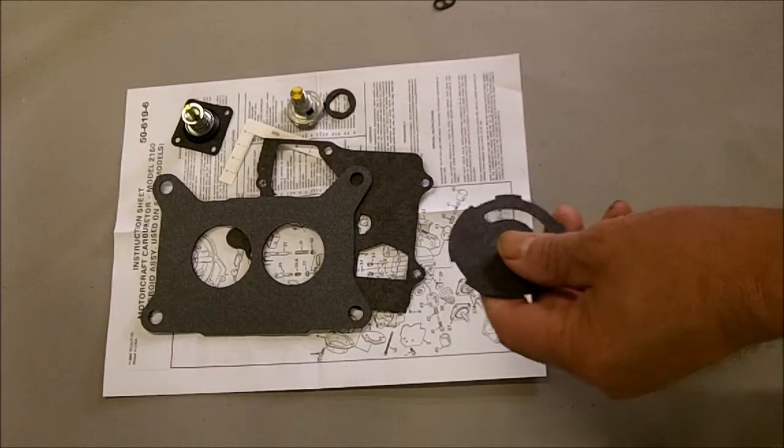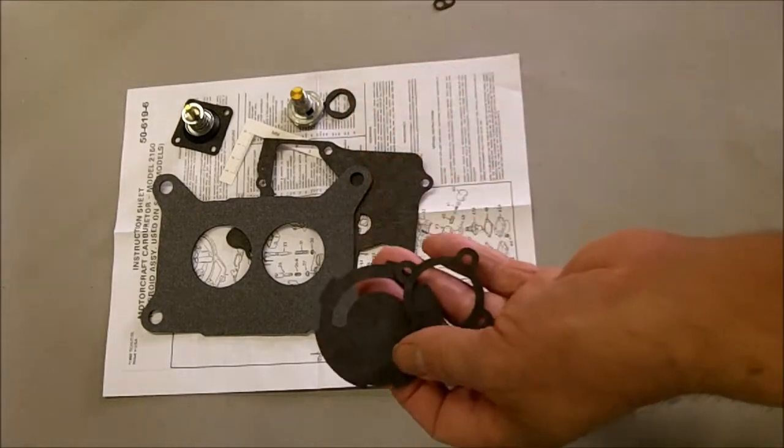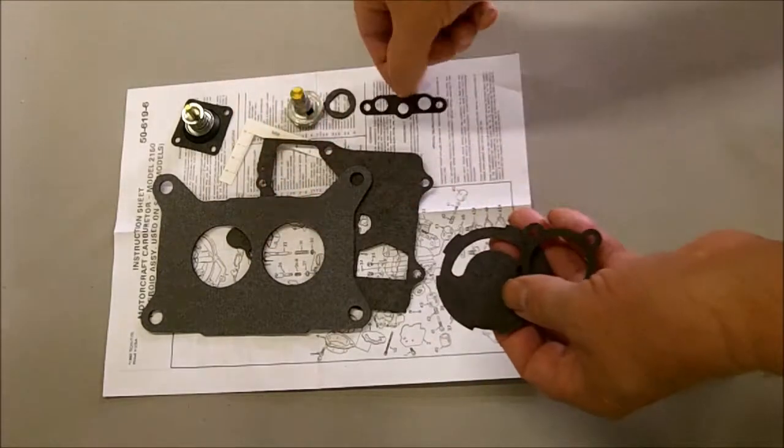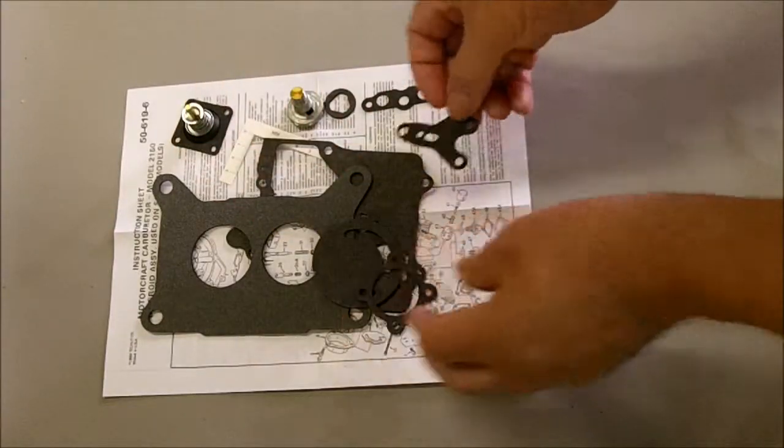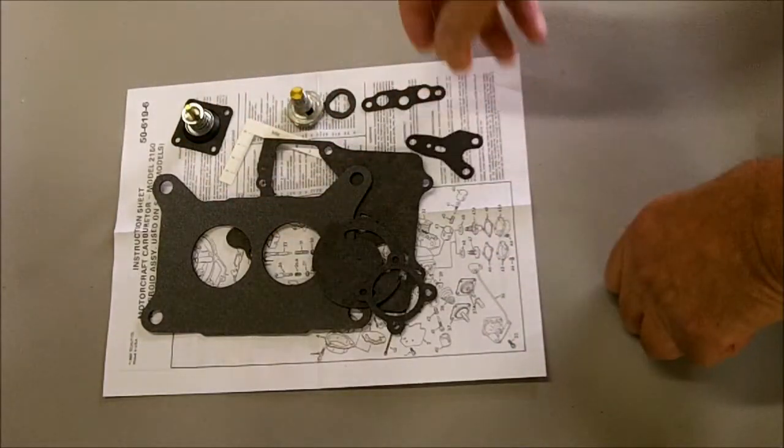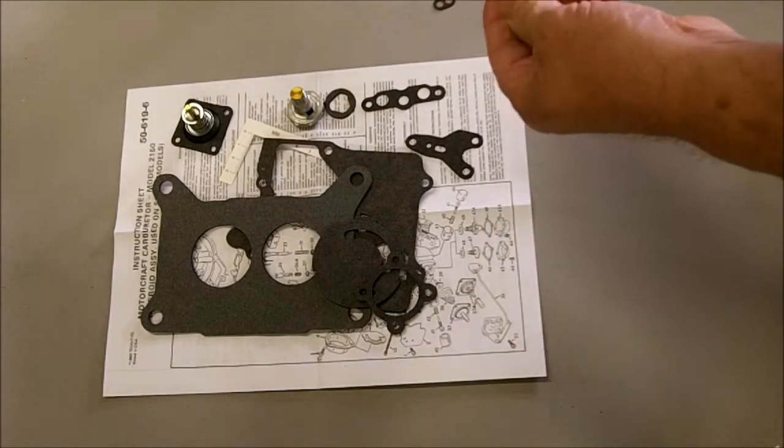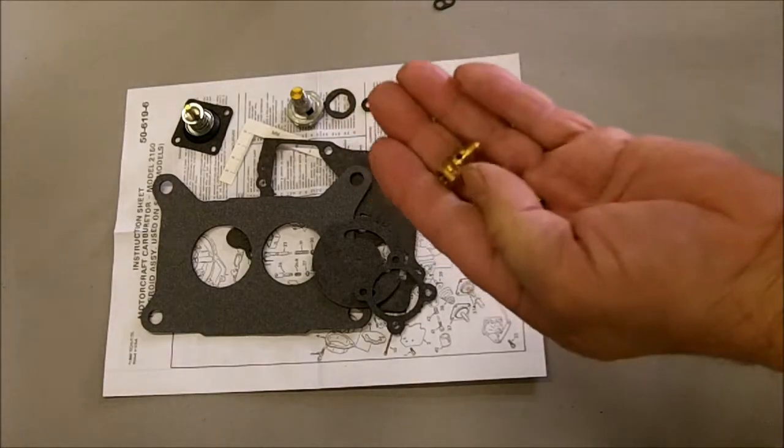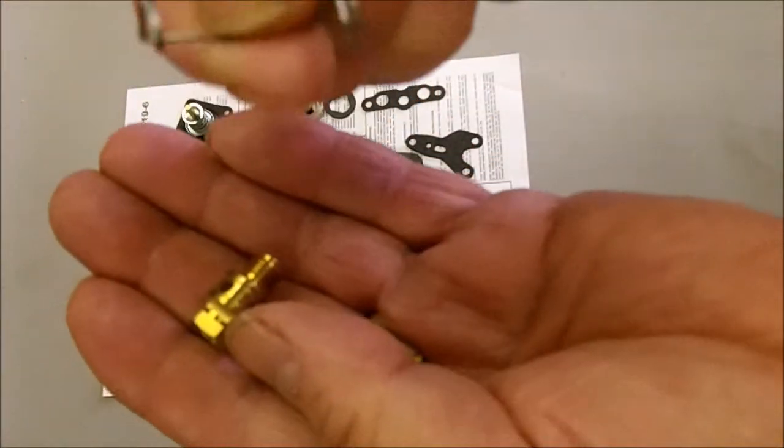Some various other little gaskets you'll need. That's your venturi gasket, you may not always use this one. Comes with a new bite and tip needle and seat along with the clip that holds it in there.